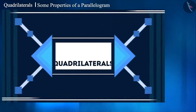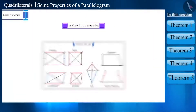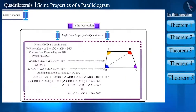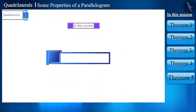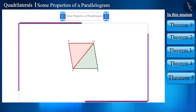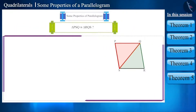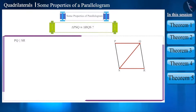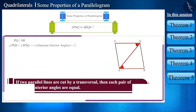Hello friends, welcome to this video on quadrilaterals. In the previous video we discussed about quadrilateral and its types, specifically parallelograms. Today we will discuss some properties of a parallelogram. Let's construct a parallelogram PQRS. If we combine two vertices to form diagonal QS, we get two triangles. In this parallelogram, side PQ is parallel to side SR, and QS is the diagonal. Therefore angle PQS and angle RSQ are equal as alternate interior angles, and angle PSQ and angle RQS are also equal.